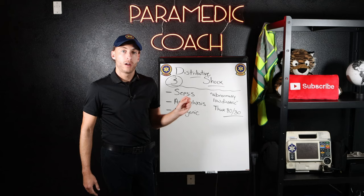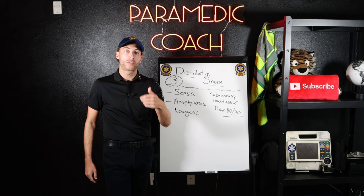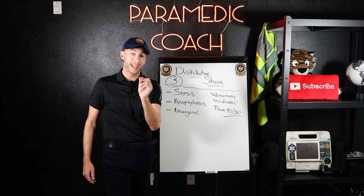Here's a clinical pro tip: if someone is in septic, anaphylaxis, or neurogenic shock, don't be surprised if they're 80 over 40 or even 80 over 30. That wide pulse pressure can be a clue to catch what's going on — not a rule, but something to think about.